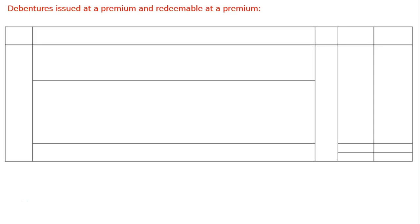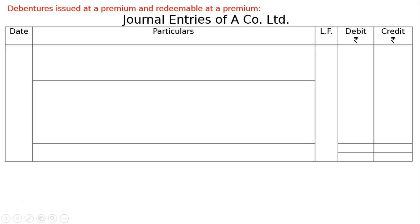This is the last part. A Company Limited issued Rs. 40,000 of 12% debentures at a premium of 10% and redeemable at 110%, meaning issued at a premium of 10% and redeemable at a premium of 10%. We will now pass journal entries for A Company Limited in the proper journal format.